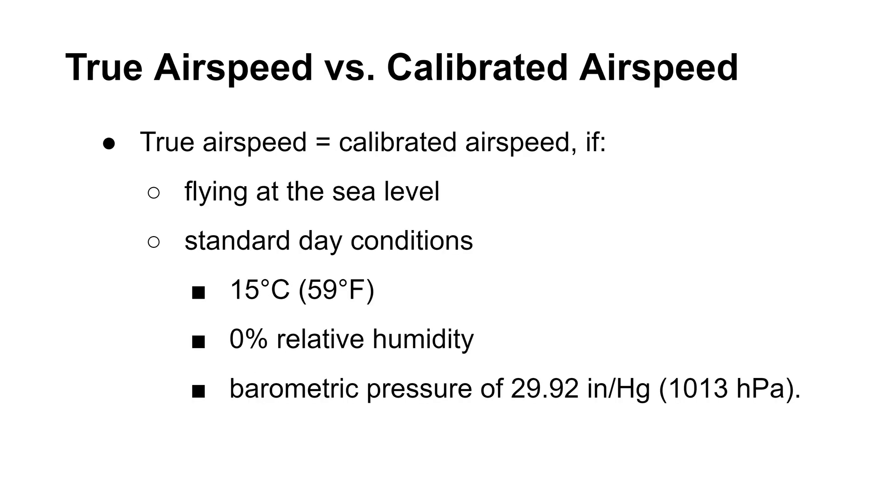True airspeed will be equal to calibrated airspeed under the following conditions. First, the airplane must fly at the mean sea level. Second, there must be a standard day condition. This means 15 degrees Celsius, 0% relative humidity, and barometric pressure of 29.92 inches mercury. Under any other conditions, calibrated airspeed will be different from true airspeed.